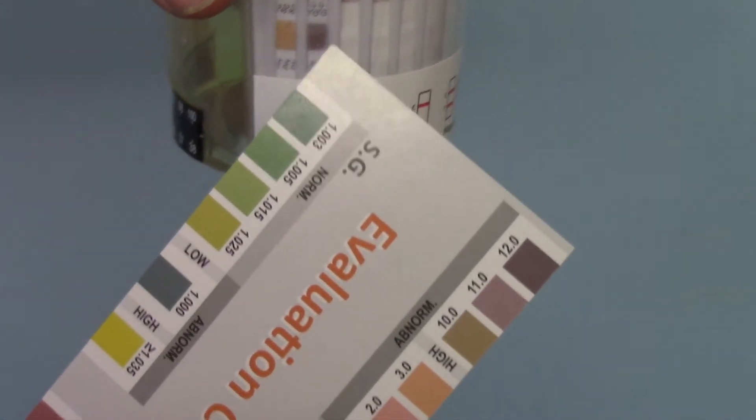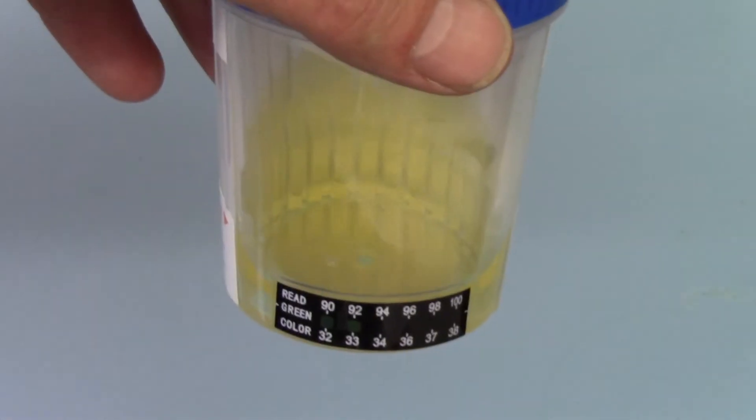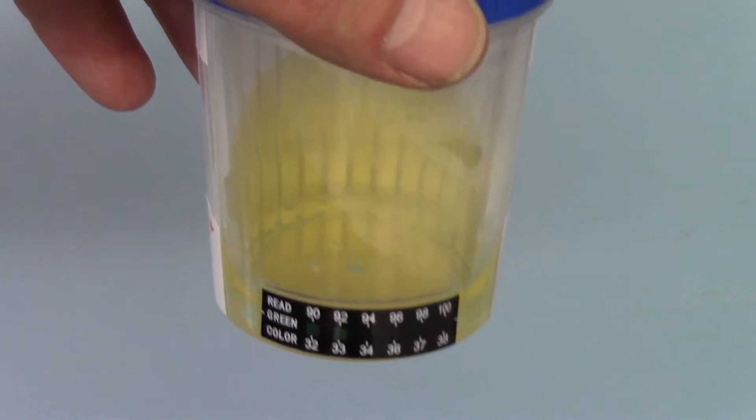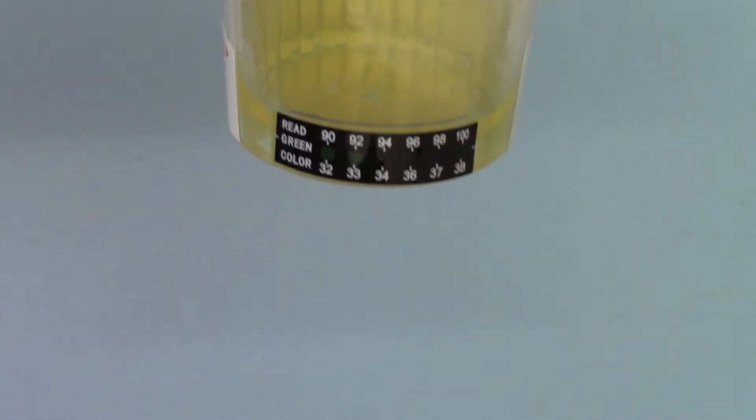If they are all negative or normal, that's reassuring that the sample that's been placed into this cup has not been adulterated or diluted and basically meets the parameters for normal strength healthy human urine.